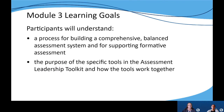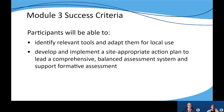Now let's look at our learning goals for this module. By the end of module three, leaders will understand a process they can use to build and implement both a comprehensive balanced assessment system and a formative assessment action plan at the local level. They will also understand the purpose of the different tools included in the assessment leadership toolkit and how those tools work together. In terms of success criteria, we want leaders to be able to identify and adapt relevant tools for local use, and to develop and implement an action plan focused on leading a comprehensive balanced assessment system that emphasizes and supports formative assessment.